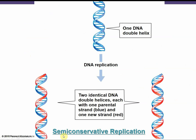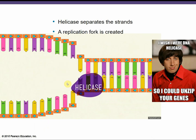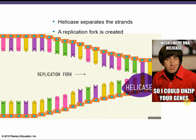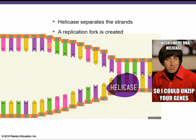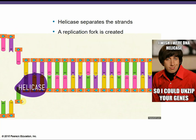DNA replication is semi-conservative — semi meaning we're kind of conservative. Replication results in two new identical daughter molecules, each composed of one original parent strand and one newly synthesized strand. This process begins with DNA helicase separating the strands, unzipping the DNA, and creating the replication fork, giving us two individual exposed strands.